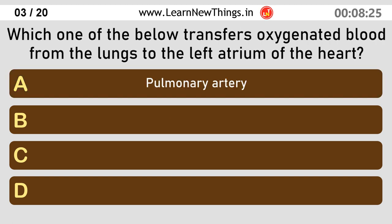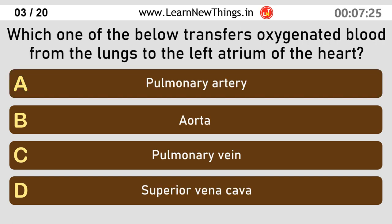Which one of the below transfers oxygenated blood from the lungs to the left atrium of the heart? Pulmonary vein.